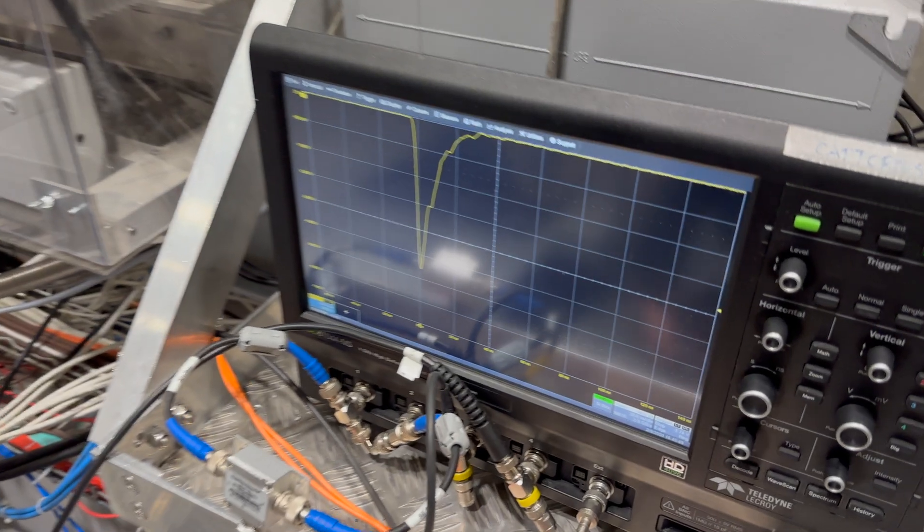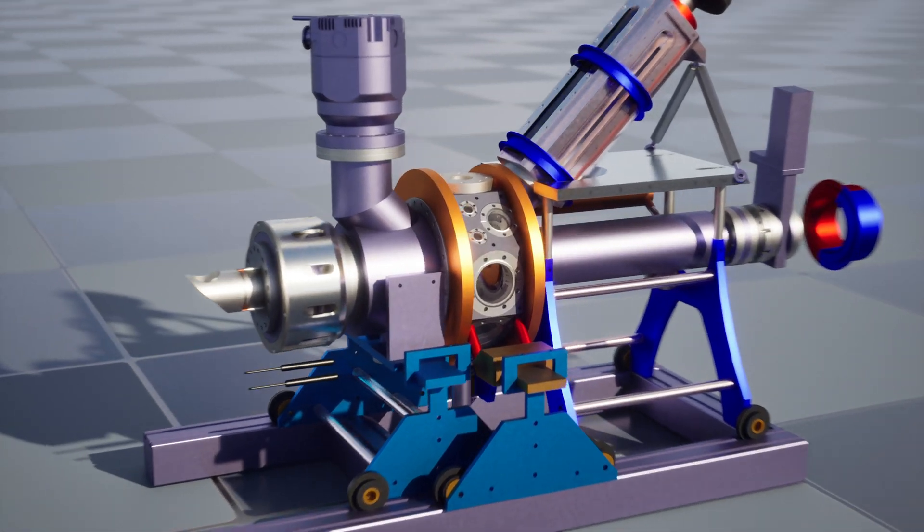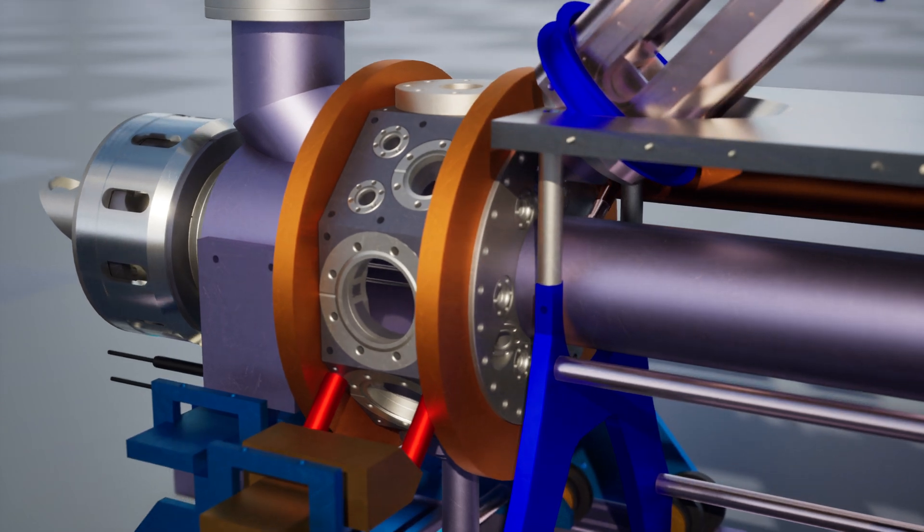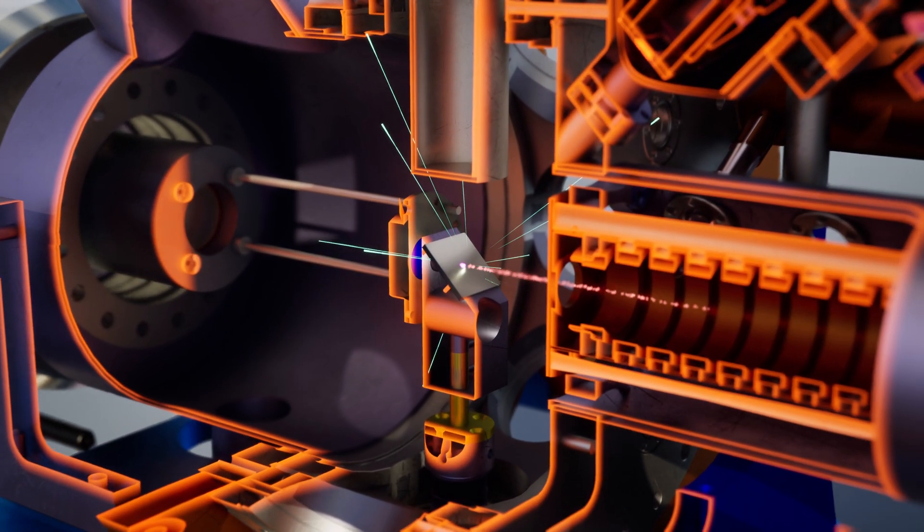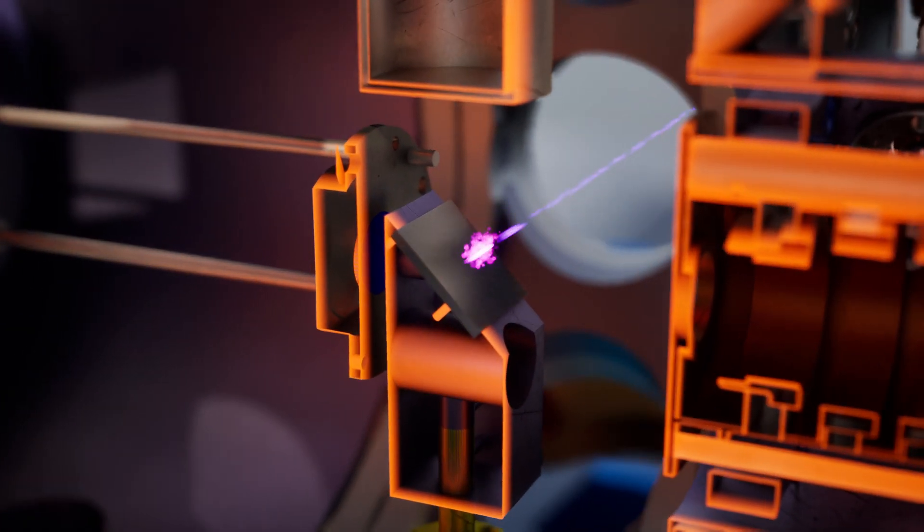We at Aegis have been cooling positronium. We have been developing this technique to use light as a way to form an optical molasses that applies friction to the positronium atoms and reduces their thermal vibrations.